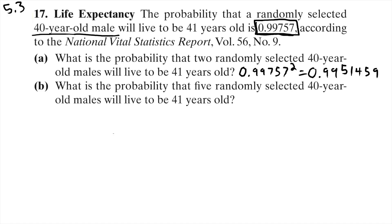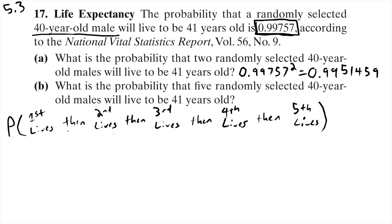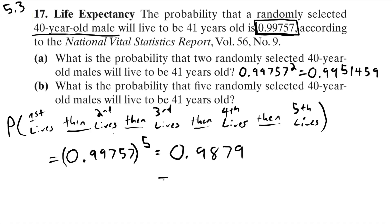The next question asks: what's the probability that five randomly selected 40-year-old males will all live to be 41? That's five events strung together, each with the same probability — the probability of survival raised to the fifth power — which is still quite high, over 98%. Good news for 40-year-old males.